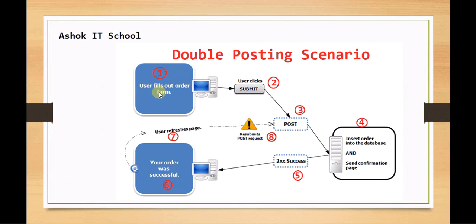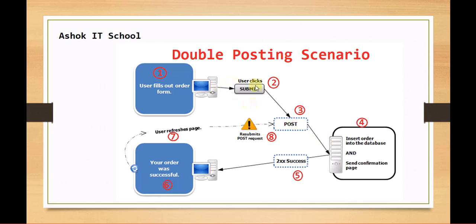The user fills the form and clicks the submit button. A POST request goes to the server which performs the business operation — in this case, inserting a record in the database. Then it returns the successful response back to the user on the same form. After that, if the user tries to reload the form using F5, the browser resubmits the POST request, which again inserts a duplicate record into the database.